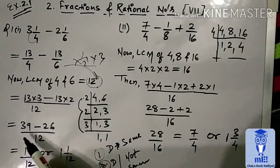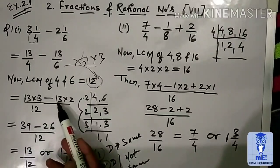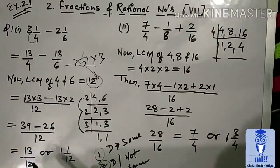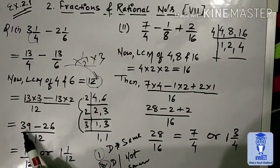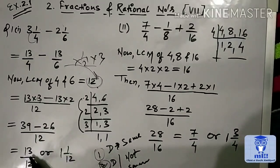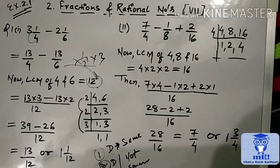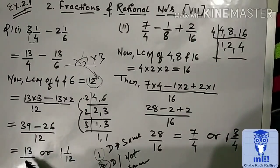Next, 13 into 3, 39. Minus multiplication of these two numbers, 26. Then, subtraction of 39 minus 26. How much? 13. Divided by 12.